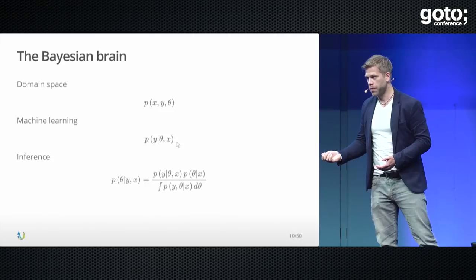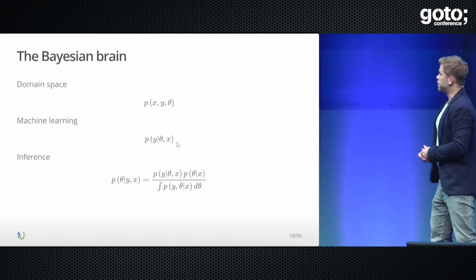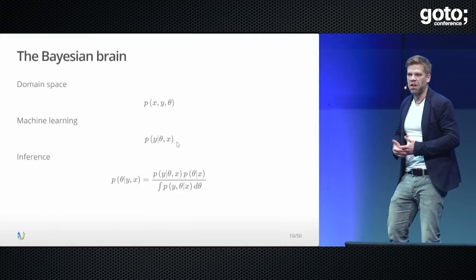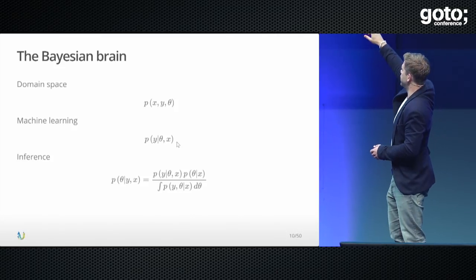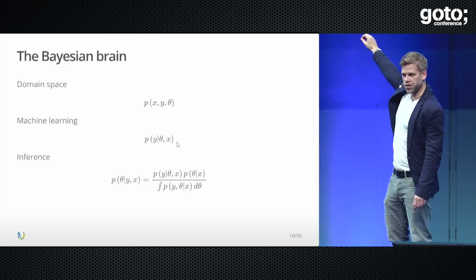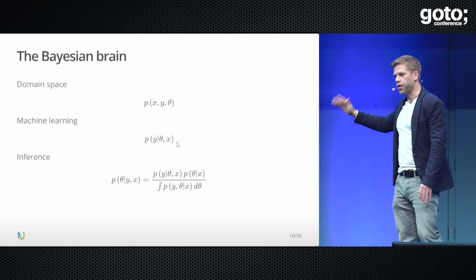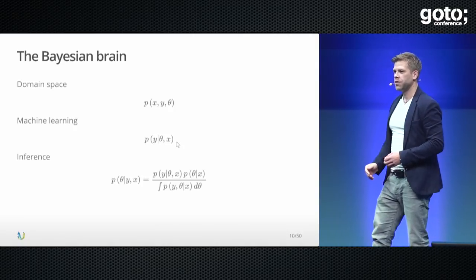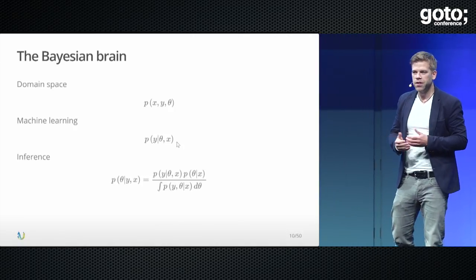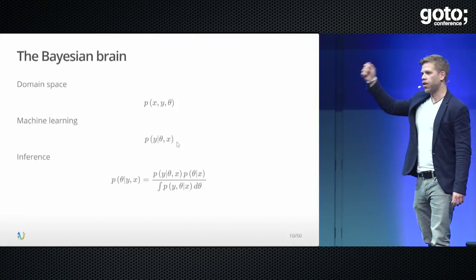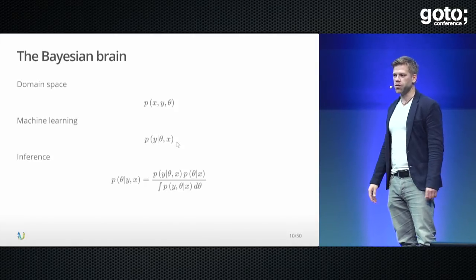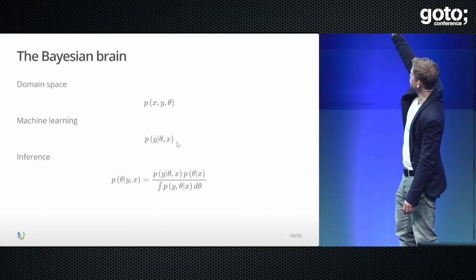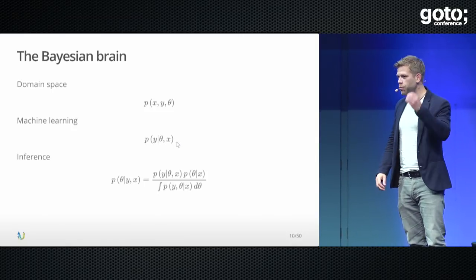Someone realized: I don't need to calculate that integral — I can just take the maximum point, because the denominator is just a normalizing constant. Then they said: what about the prior? If I don't want to state my mind, I'll just use a uniform distribution from minus infinity to infinity. And with that, the equation was reduced to only the likelihood. But people just forgot that these assumptions are not true.